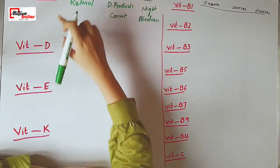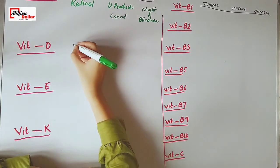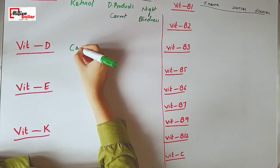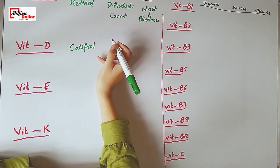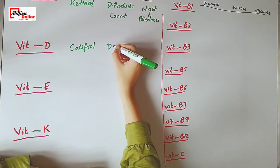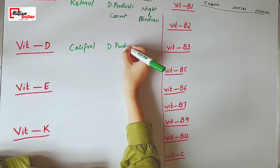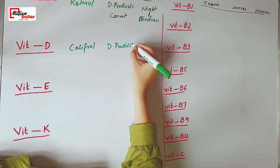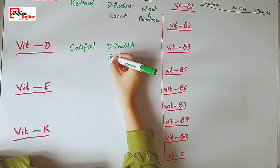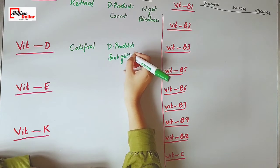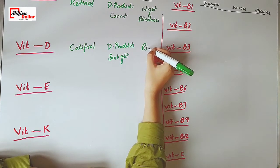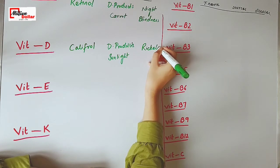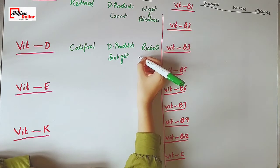The chemical name of vitamin D is calciferol. The sources of vitamin D are dairy products and sunlight. The diseases caused by the deficiency of vitamin D are rickets and osteomalacia.